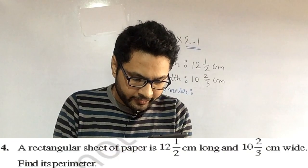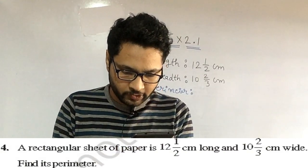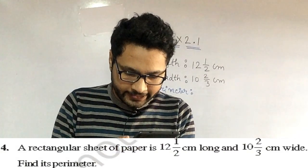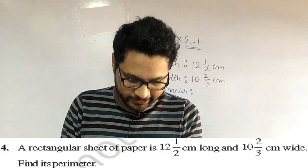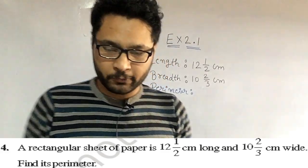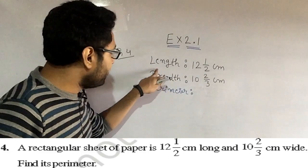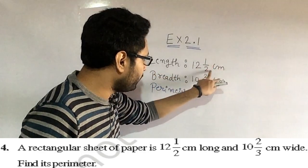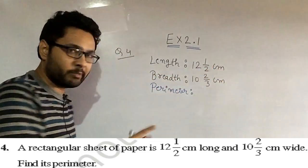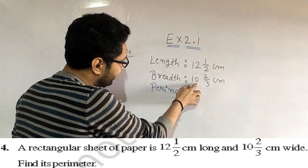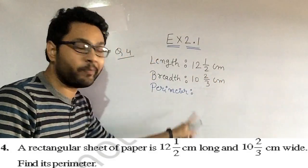A rectangular sheet of paper is 12 and 1/2 cm long and 10 and 2/3 cm wide. Find its perimeter. The length of the paper is 12½ cm and its breadth, which means the width of the paper, is 10⅔ cm.